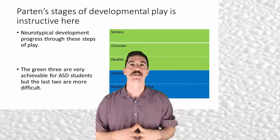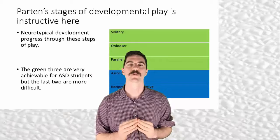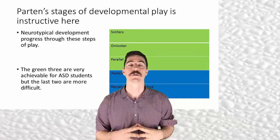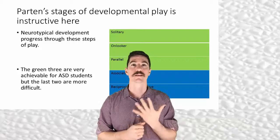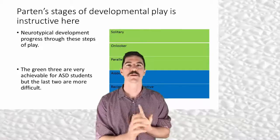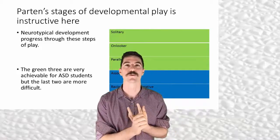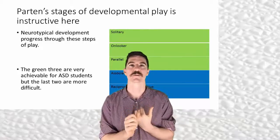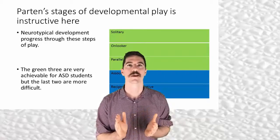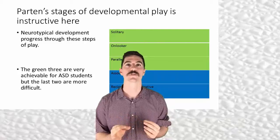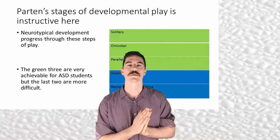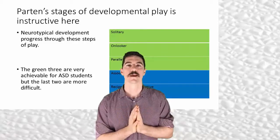The best way to explain the social dilemmas for a person with ASD is to begin with early developmental stages, specifically play. There are five stages of developmental play: firstly solitary, then parallel, then onlooker, then associative, and then reciprocal. The core concept — where people with ASD tend to stop or struggle to develop further — will be explained through each of these stages.